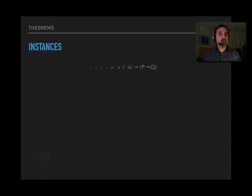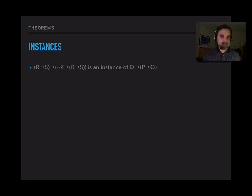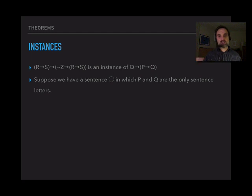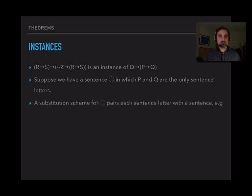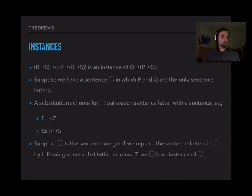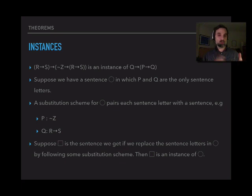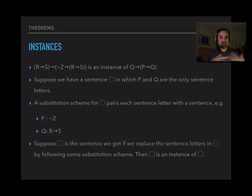So what's an instance? We have 'if Q, then if P, then Q.' We can say that 'if R, then S, then if not Z, then if R, then S' is an instance of 'if Q, then if P, then Q.' The sentence has P and Q as its only sentence letters, and we can pair them with other sentences — pair P with 'not Z' and Q with 'if R, then S.' Then we go through the original sentence and replace all P's and Q's with what they're paired with, and we get that bigger conditional. The later sentence is an instance of the first sentence — whenever you uniformly replace all the sentence letters in the first sentence and get another sentence, that later sentence is an instance of the first.